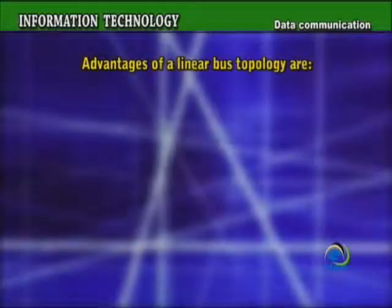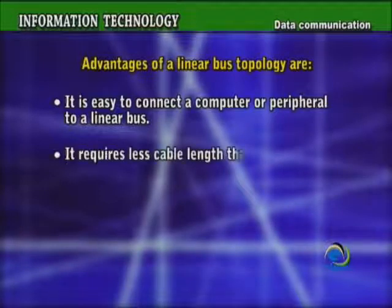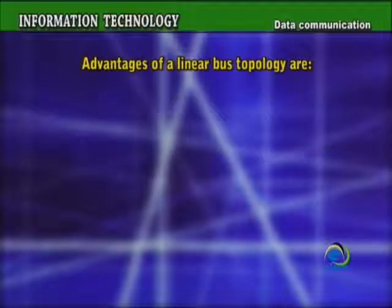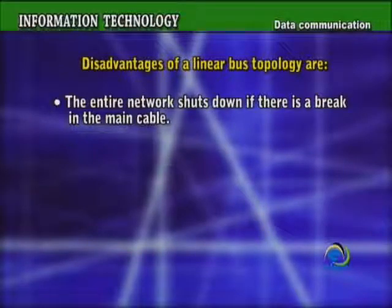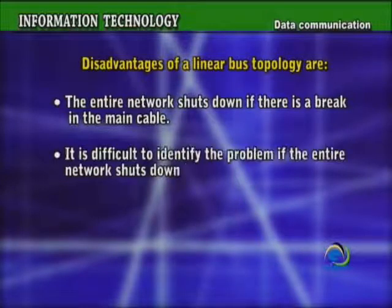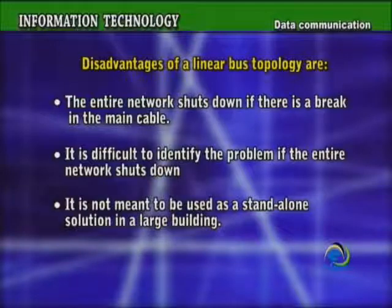Advantages of a linear bus topology: it is easy to connect a computer or peripheral to a linear bus, and it requires less cable length than a star topology. Disadvantages: the entire network shuts down if there is a break in the main cable, it is difficult to identify the problem if the entire network shuts down, and it is not meant to be used as a stand-alone solution in a large building.